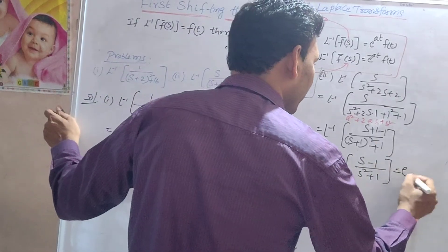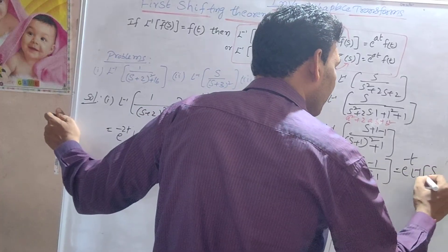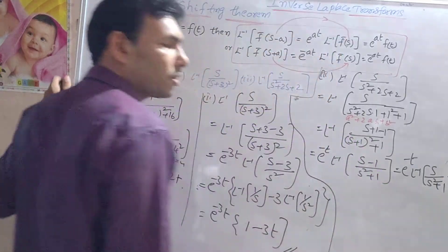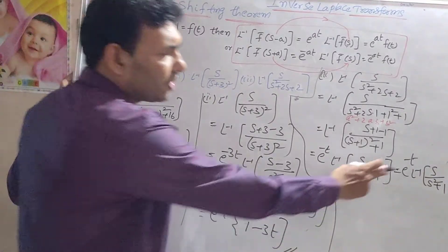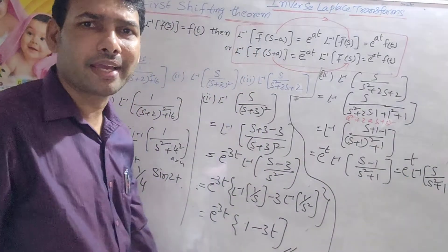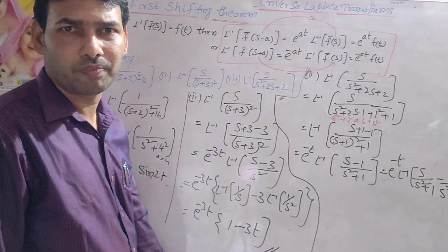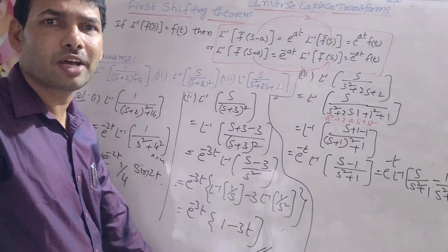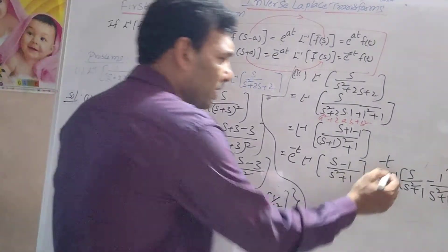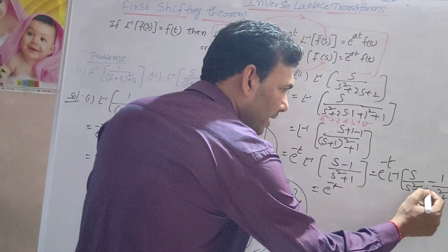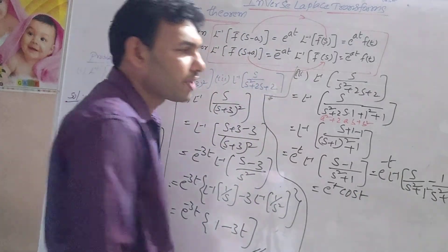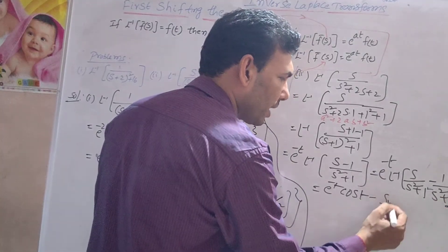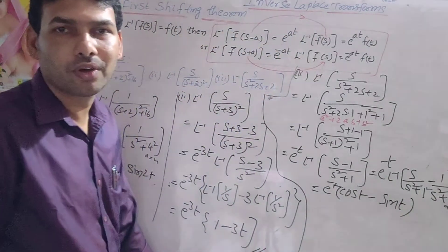Split the expression: e^(minus t) into [L inverse of s/(s²+1) minus L inverse of 1/(s²+1)]. Using the standard formulas — L inverse of s/(s²+a²) = cos(at) and L inverse of 1/(s²+a²) = (1/a) sin(at) — with a = 1, the answer is e^(minus t) into (cos t minus sin t).